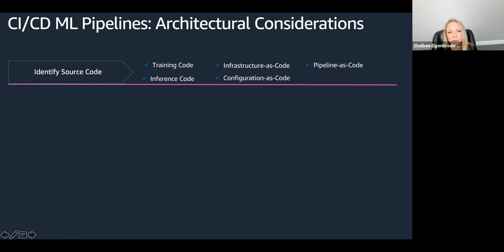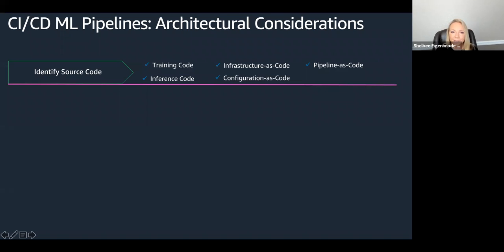You first want to identify all of your source code. Looking at the inputs required for SageMaker, things like training code, it could be just configuration, it could just be hyperparameters if you're using a built-in algorithm. You want to look at all the code — and that code includes not only the training code and the inference code, but also the infrastructure as code, the configuration as code, the pipeline as code. For example, if you deploy a SageMaker endpoint, you're probably going to have some infrastructure and configuration code to go along with that for the deployment of that endpoint. You want to treat that as code and accordingly store it in a source code repository under version control.